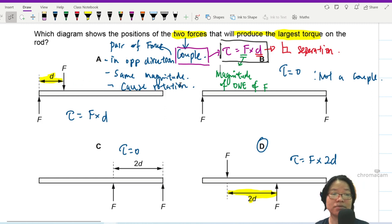So step one, identify the couple. If you want to use this equation directly, you must make sure they are a couple to begin with. So option B is not a couple. Option C is not a couple because they don't cause rotation.